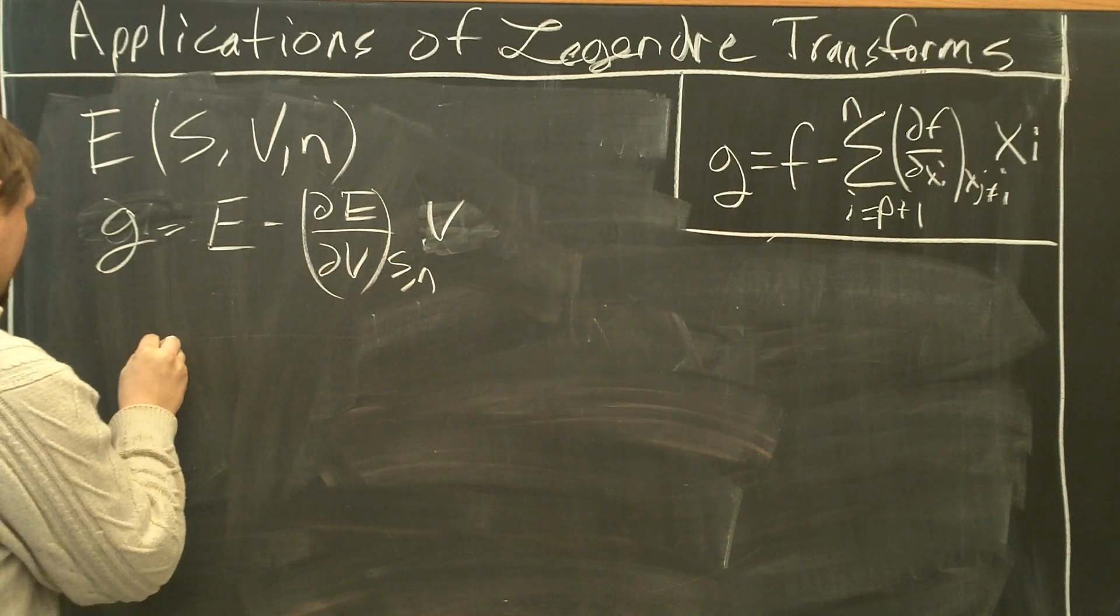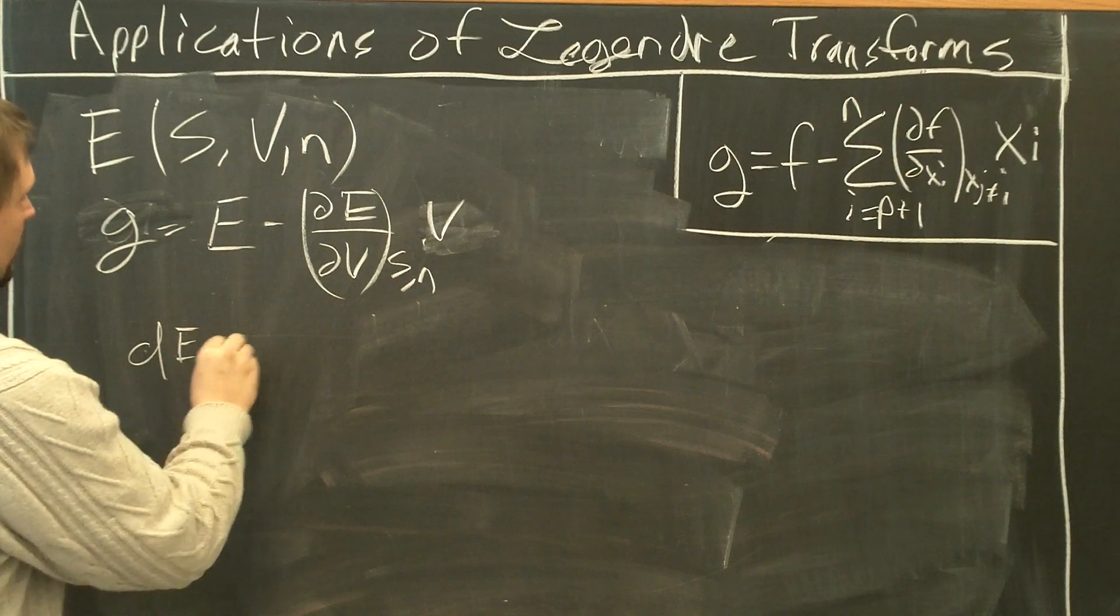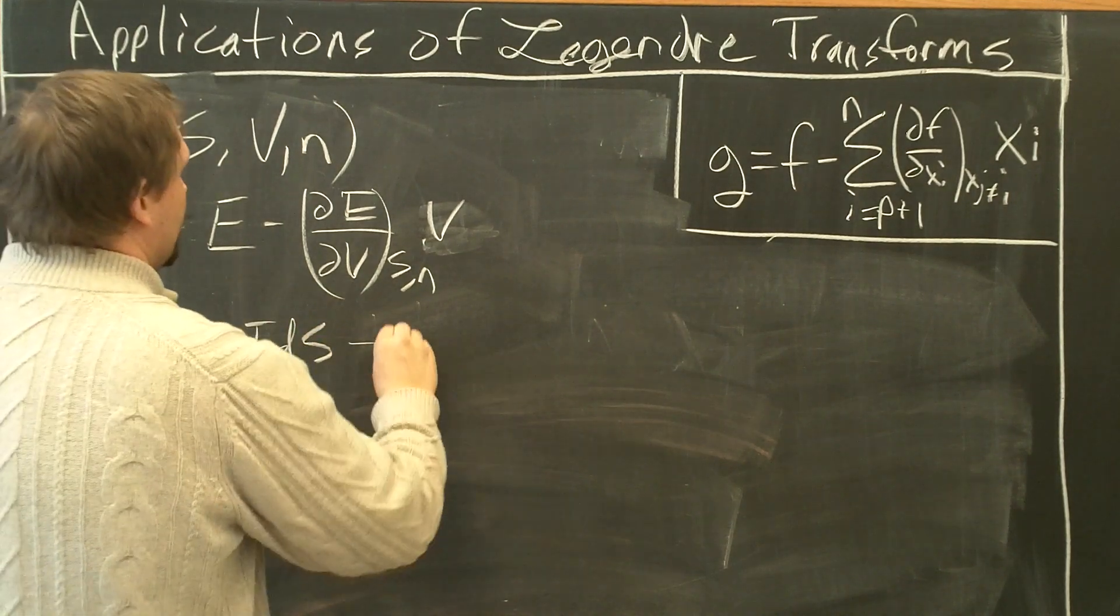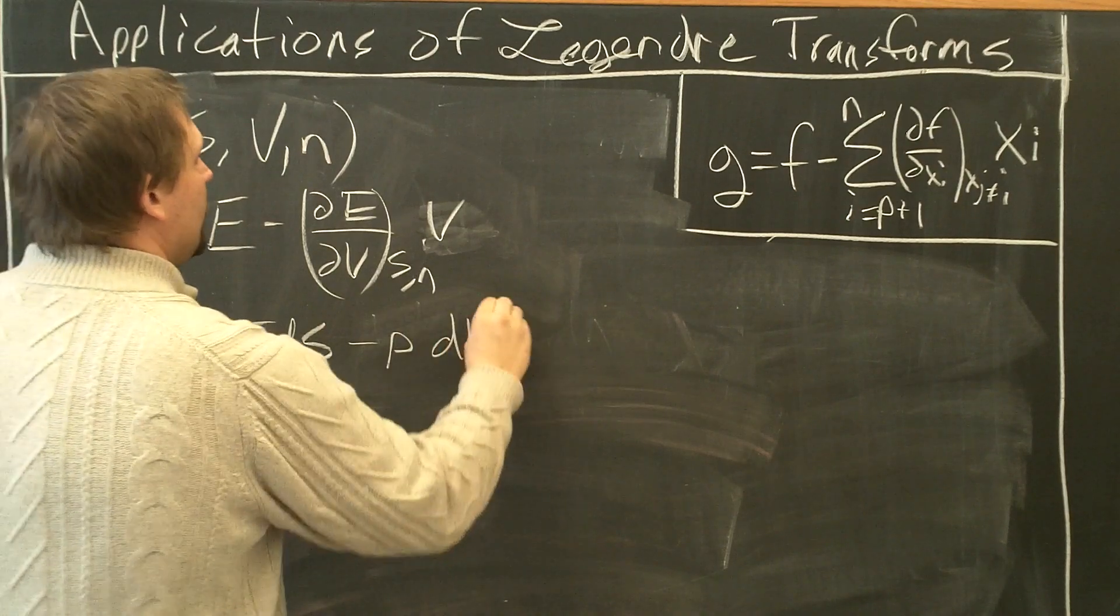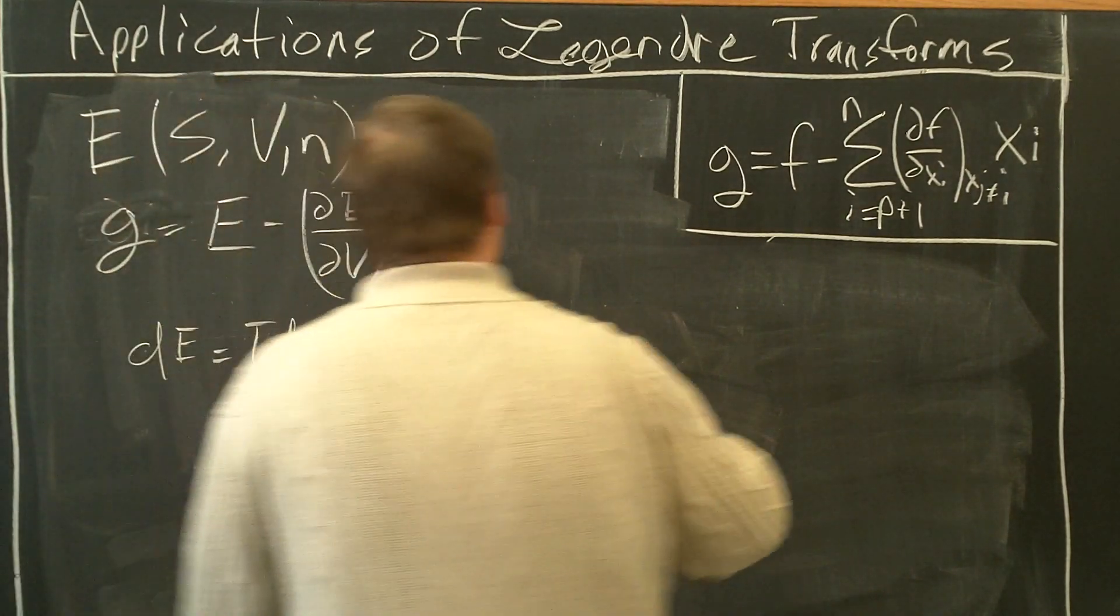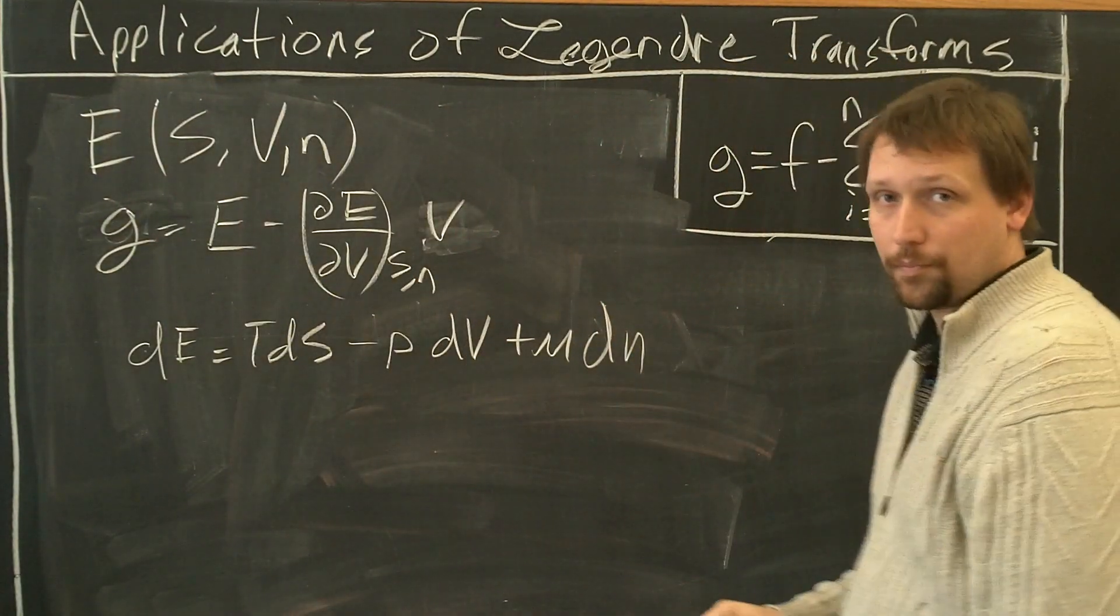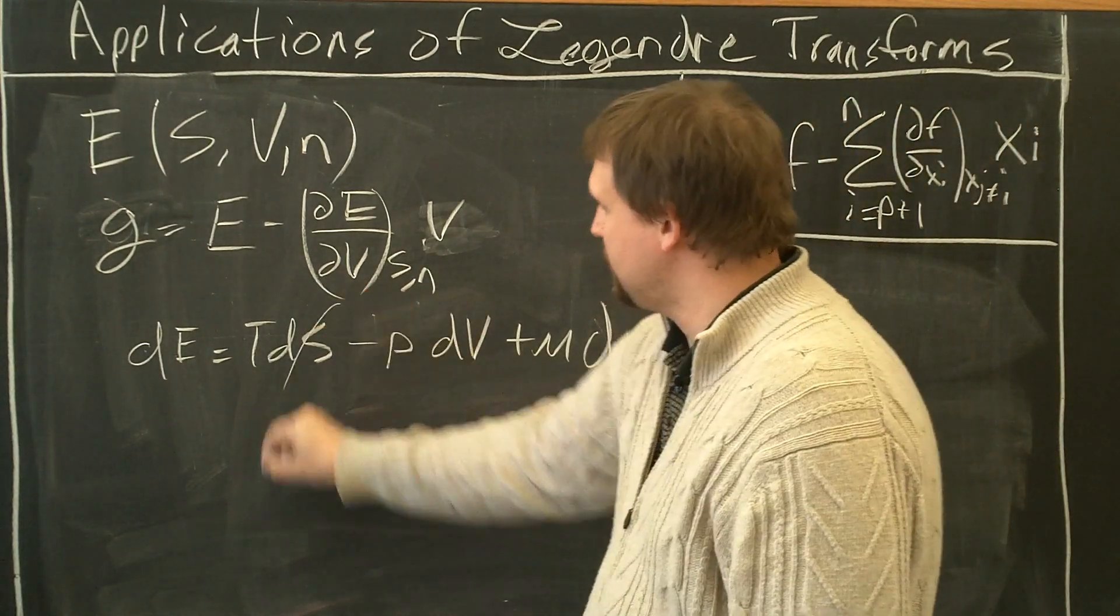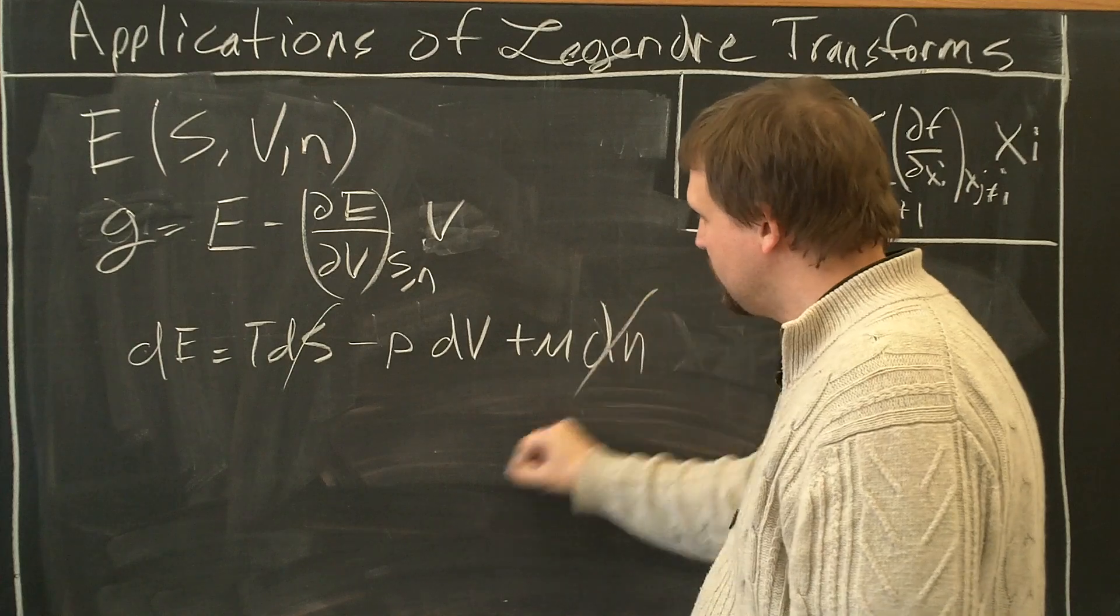Let's find out. dE equals T dS minus P dV plus mu dN. Okay. So simply do this: S fixed, gone. N fixed, gone.